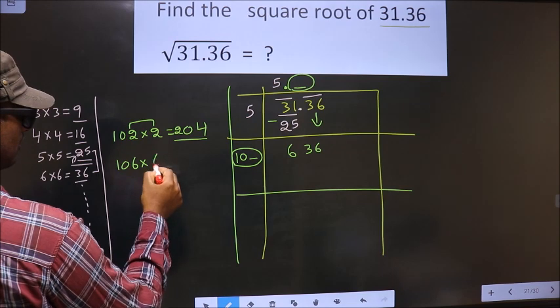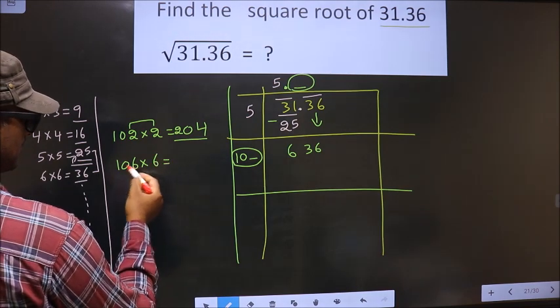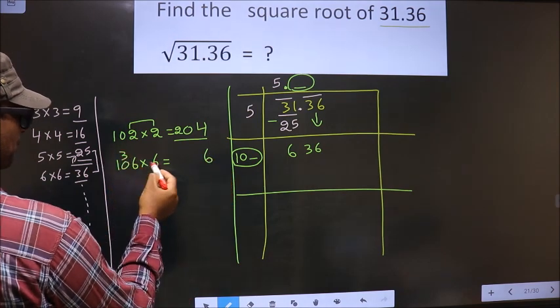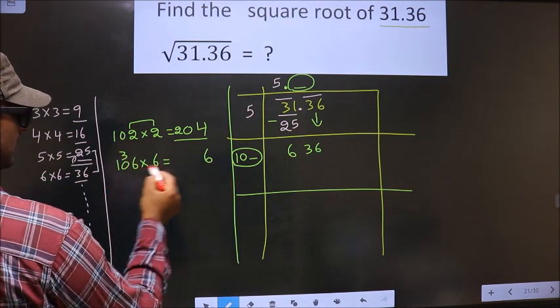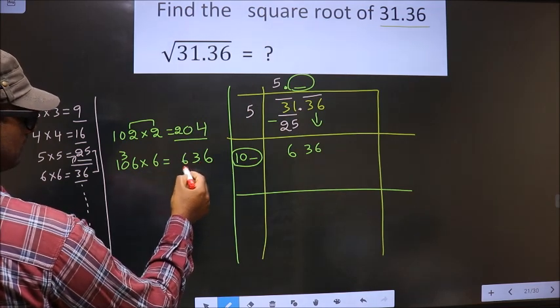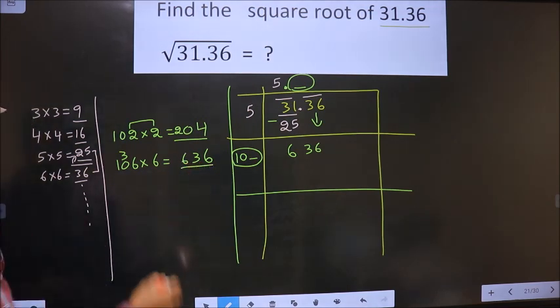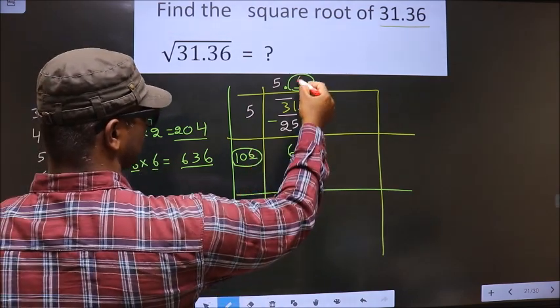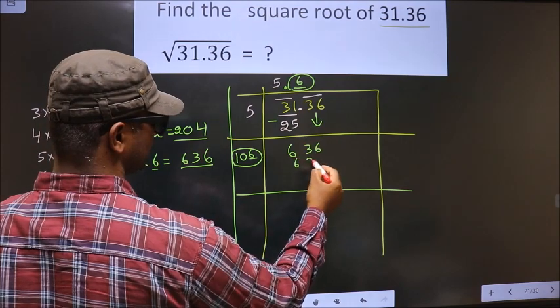Then we should also multiply by 6. So 6 into 6 is 36, so 6 here, 3 here. 6 into 0 is 0 plus 3 is 3. Now 6 into 1 is 6. We got exactly 636. We got exact 636 for the number 6. So now here you take 6 here, 6 here: 636.